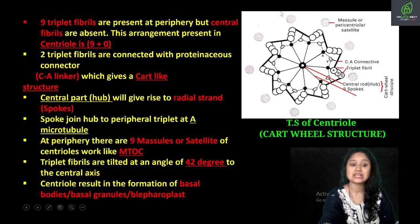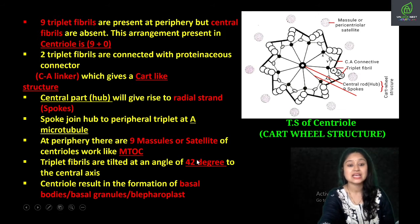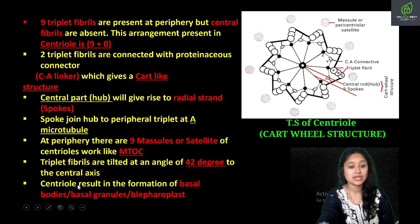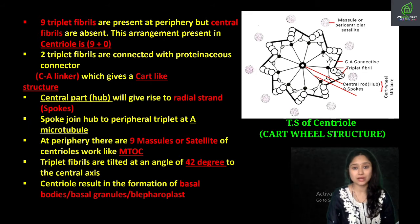Ye jo triplet fibrils hain, they are tilted at an angle of 42 degrees to the central axis. Centrioles later get transformed into basal bodies, also known as basal granules or blepharoplast.